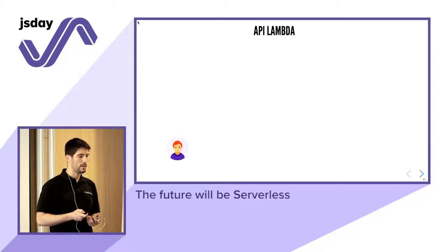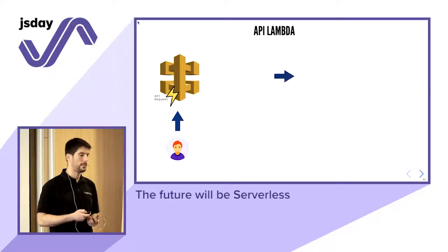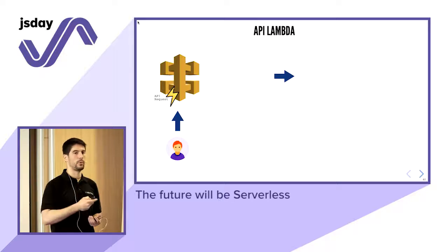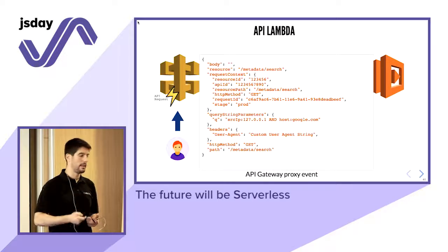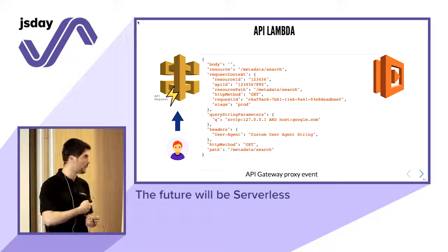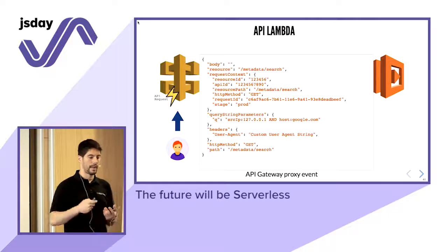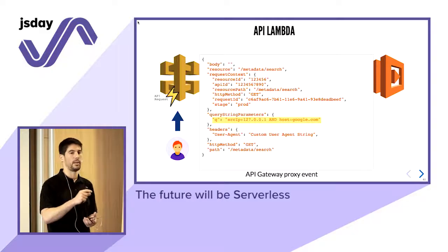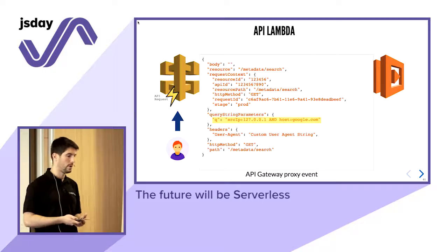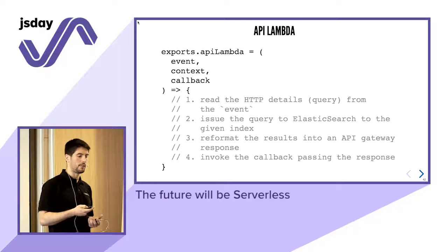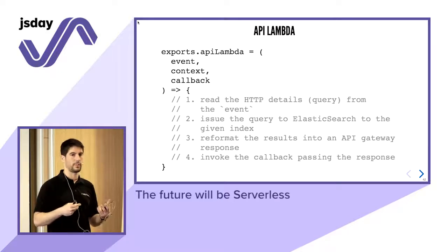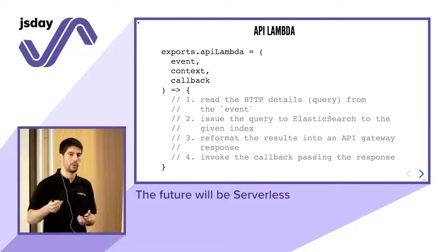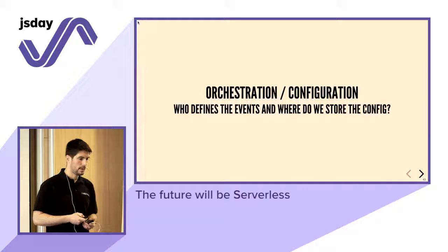The API Lambda is also very interesting. Once we configure API Gateway, it invokes the Lambda passing an event representing an HTTP request. You can read fields like body, resource, headers, and query string parameters — which is what we're interested in, since this is how we expose search functionality. Users put a query string parameter with the query they want to throw at Elasticsearch. We read those details from the event, issue the query to Elasticsearch, read the response, and convert it to a JSON object the client can consume.